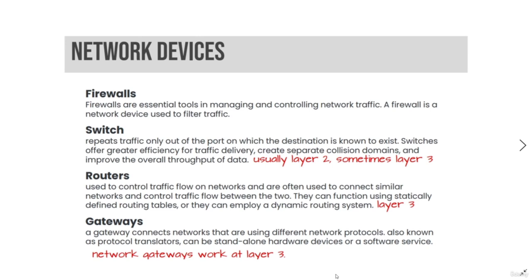Network devices include firewalls, switches, routers, and gateways. Firewalls are essential tools in managing and controlling network traffic — a firewall is a network device used to filter traffic. Switches repeat traffic only out of the port on which the destination is known to exist, offering greater efficiency for traffic delivery, creating separate collision domains, and improving overall throughput of data. They usually operate at OSI model layer 2.